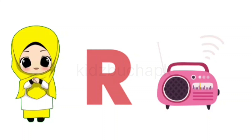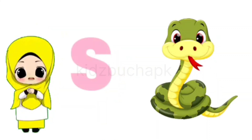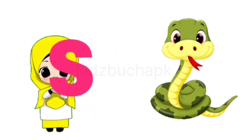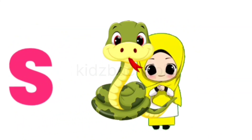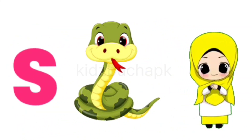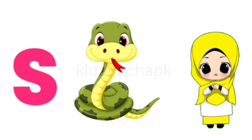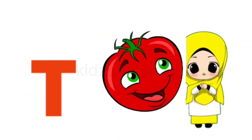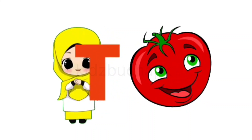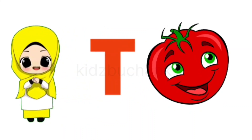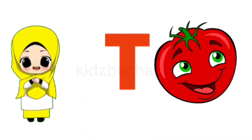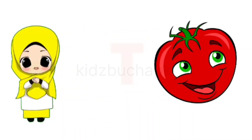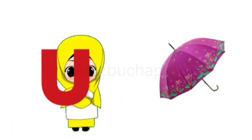S for Snake, Snake means Saap. T for Tomato, Tomato means Tamatar. U for Umbrella, Umbrella means Chhatri.